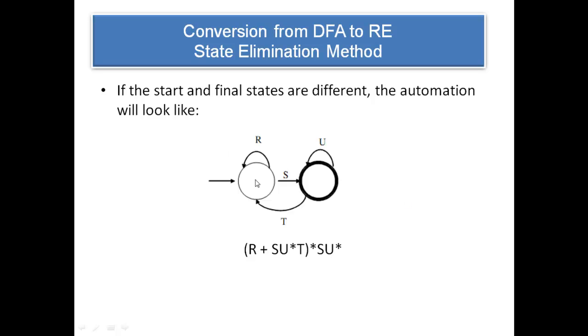There are two possible cases over here. Either the start state and the final state may look different. After having eliminated all the intermediate states, if the start state and final state of the automaton are different, it will be left out with automation of this type. These are the possible edges we have. Both the states can have self loops represented as R and U. There may be an edge from S to F represented as S. There may be a loop like this.